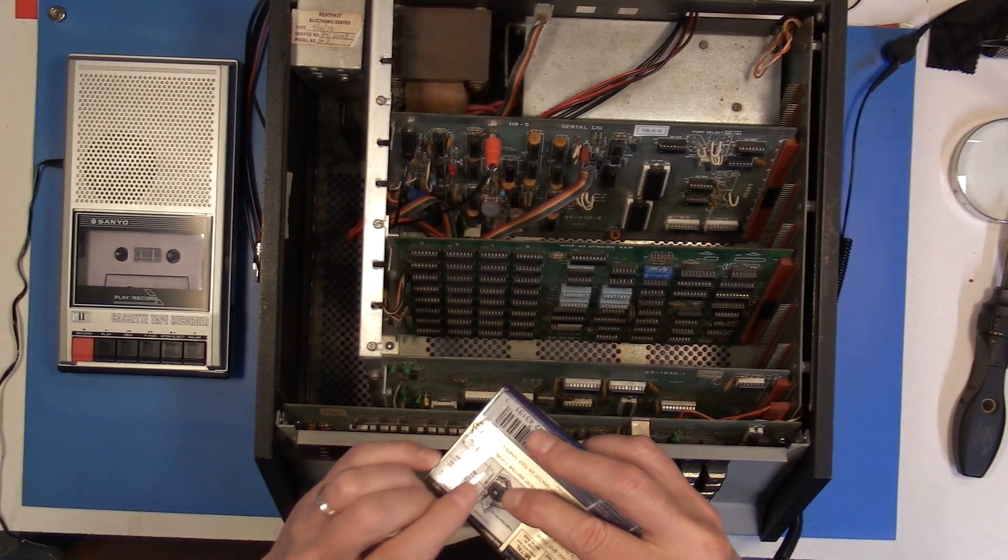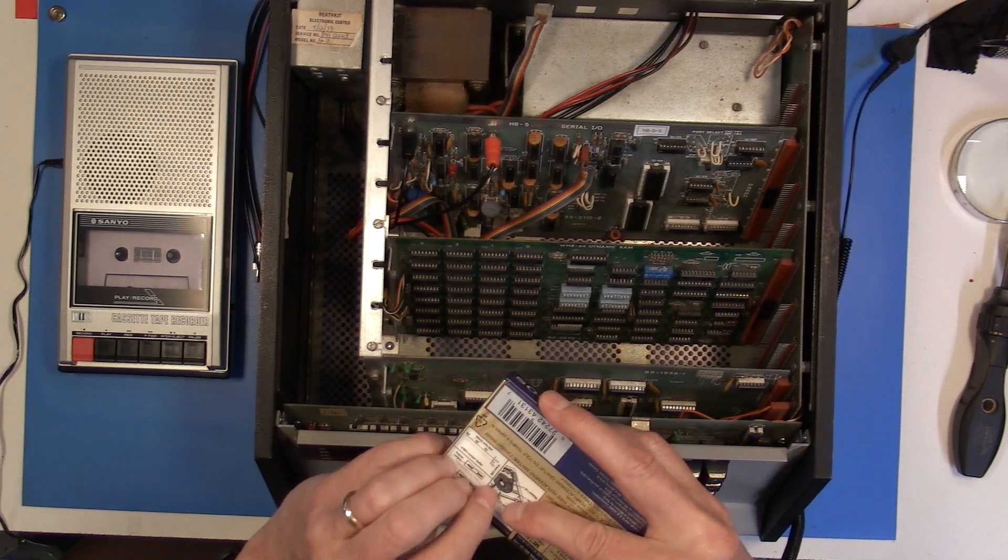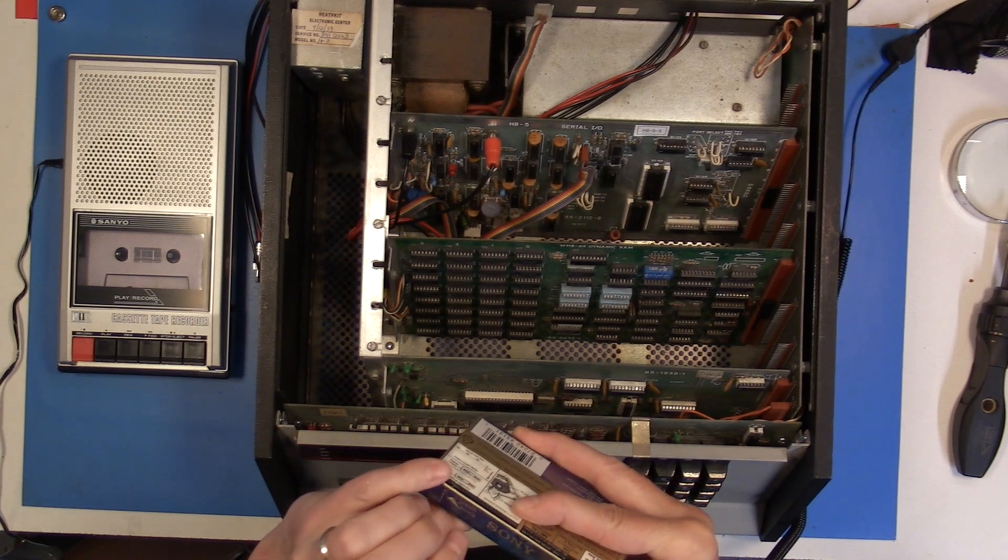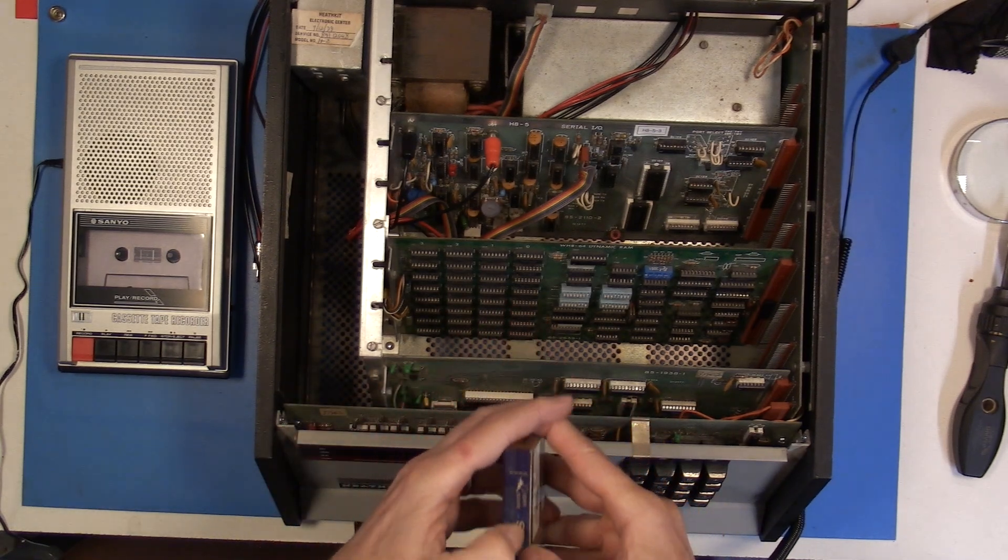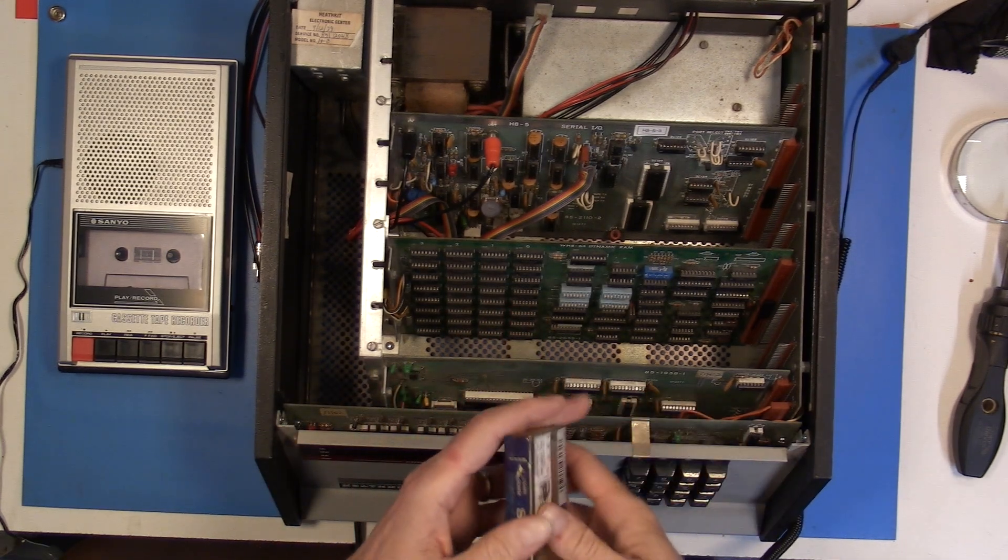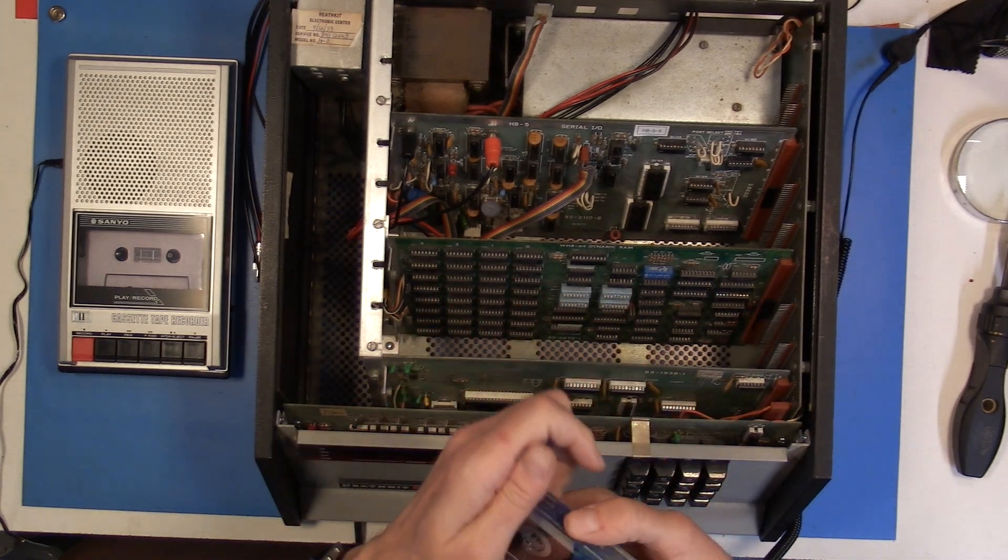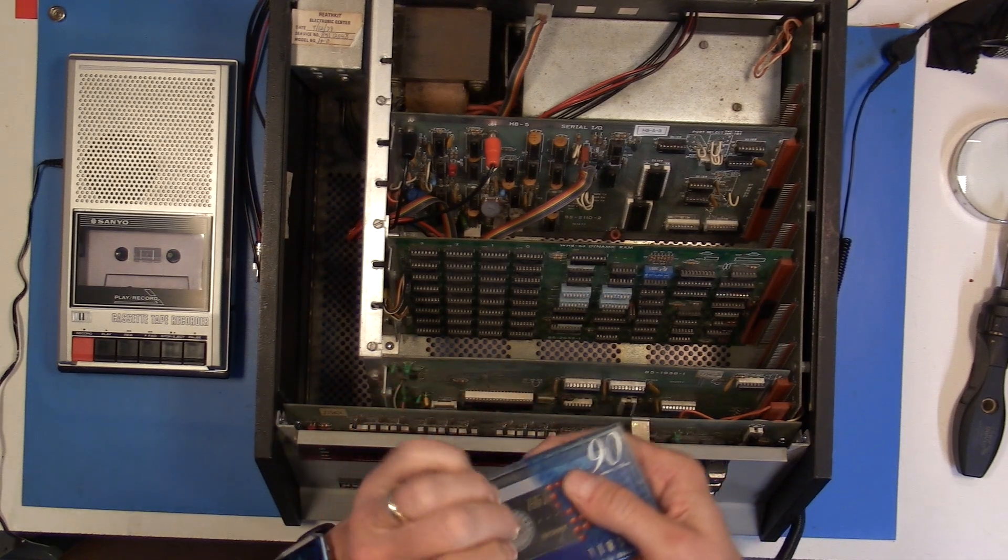Now here's something I haven't done in a while and that's to take the wrapper off of a brand new cassette tape. Now back in the day they would have had special cassette tapes that were used for computers. They called them data cassettes and they were usually fairly short, usually a 15 minute or at most a 30 minute tape.